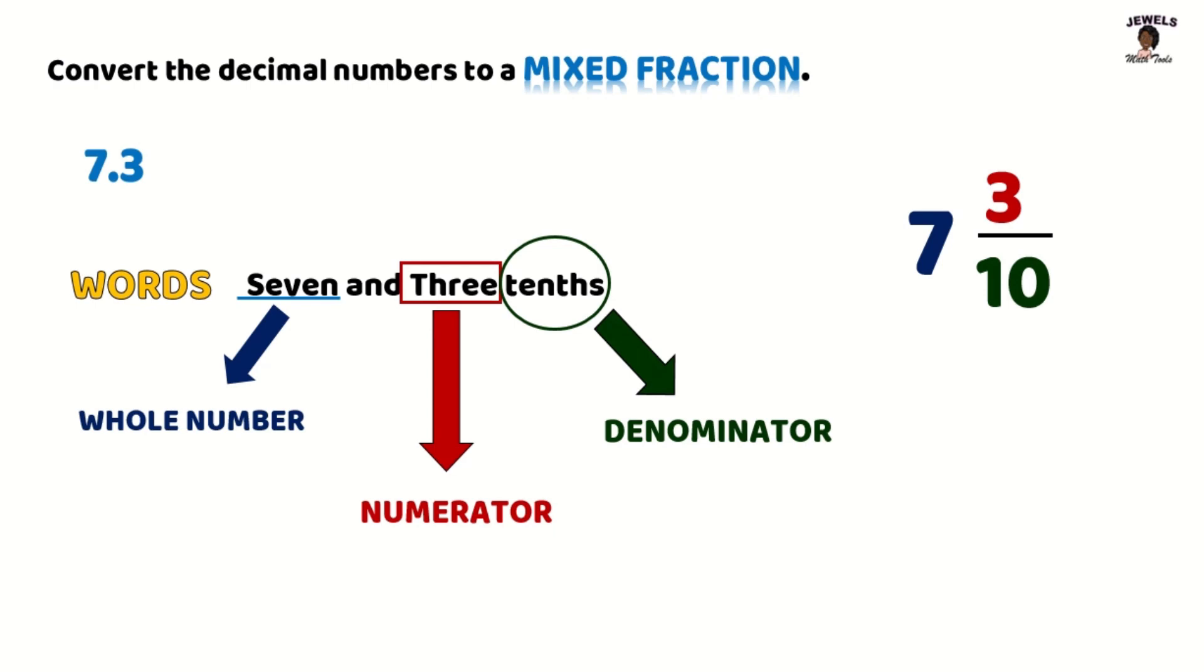Because our fraction and our decimals when changing it into word form are pretty much the same thing and each of those words represent a part of our fraction and the position of our decimal number.